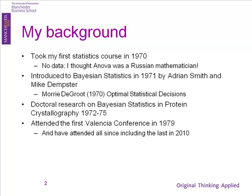Since then, every three or four years there's been a Valencia conference, and I've been to them all. The last one was in 2010, and it was actually the last one, because there's been a decision that you don't need them anymore. From 79 people in 1979 to 2010, where there were several hundred — a small proportion of people in the world rather than the majority doing Bayesian stats. Bayesian stats has gone from a very small proportion of statistics as practiced across all disciplines to 50, 60, 70% of the statistics as practiced.